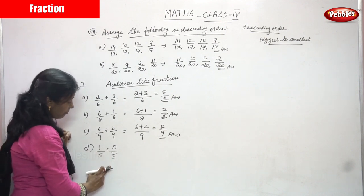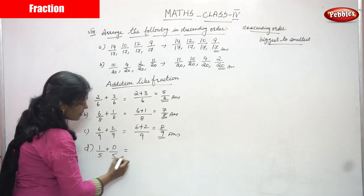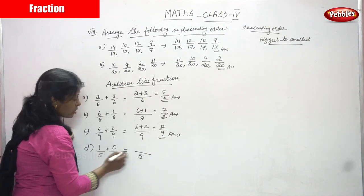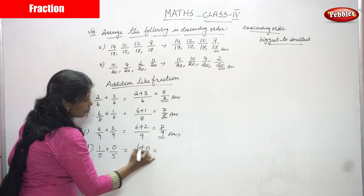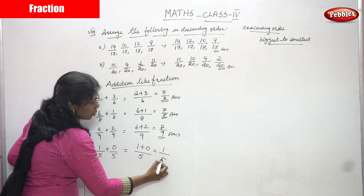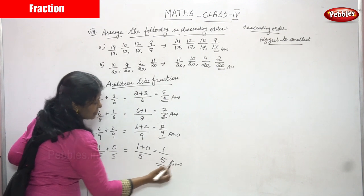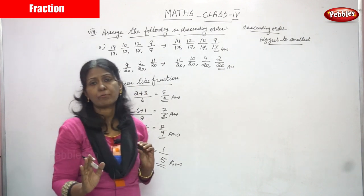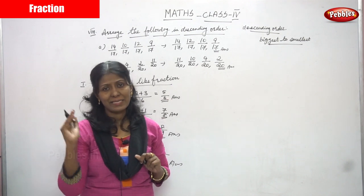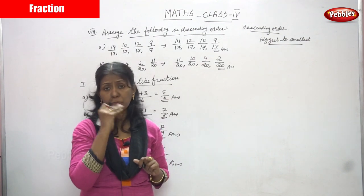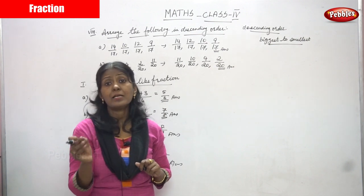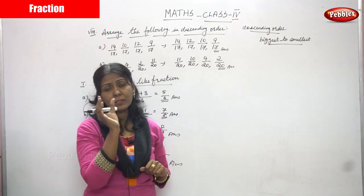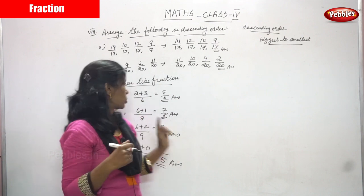Next: 1 by 5 plus 0 by 5. In both fractions the denominators are the same, so write the denominator once and add the numerators. 1 plus 0 equals 1, so the answer is 1 by 5. I have solved all the problems. For addition of like fractions: check that denominators are the same, write the denominator once, then add the numerators to get the final answer.